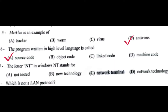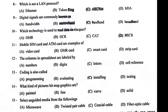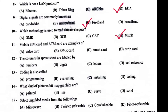The letters NT in Windows NT stand for New Technology. Which is not a LAN protocol: IRDA. Digital signals are commonly known as baseband. Which technology is used to read data on checks: MICR. Mobile SIM card and ATM are examples of smart card.